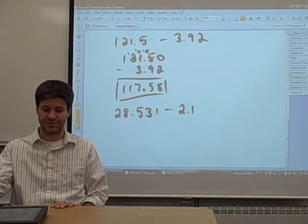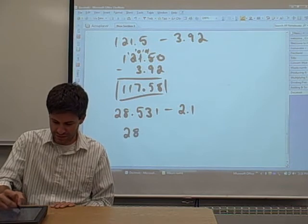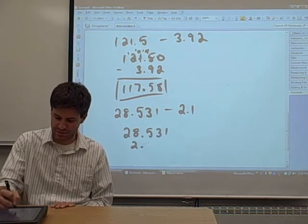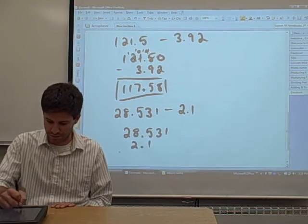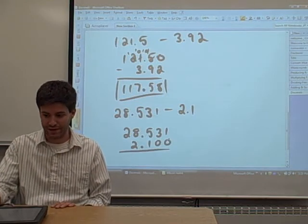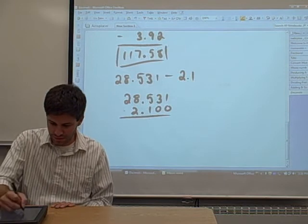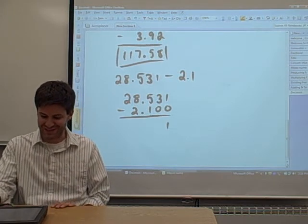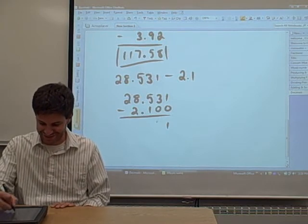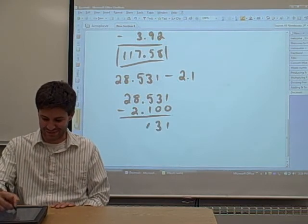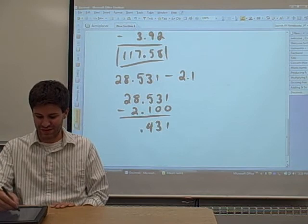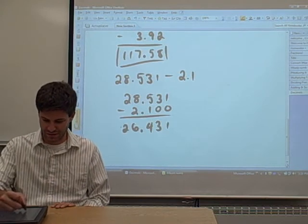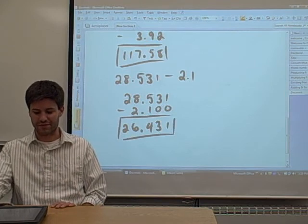So, again, line up your decimals. 28.531. Line up the decimal. Put it right there. 2.1. Fill in any gaps with zeros, if you like. And subtract. 1 minus 0 is 1, 3 minus 0 is 3. 5 minus 1 is 4. 8 minus 2 is 6. 2 minus 0. So, there you go. There's an answer for you.